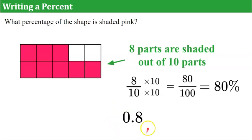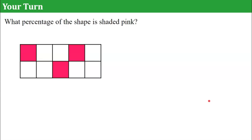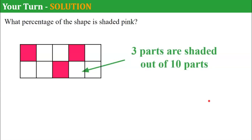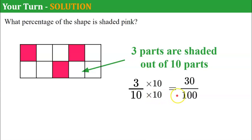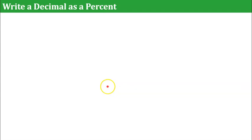8 tenths written as a decimal is 0.8, and 80 one-hundredths written as a decimal is 0.80 — these are equivalent. Your turn. Determine what percentage of the shape is shaded pink. Welcome back. Three of our ten parts are shaded. Three tenths — to write it with a denominator of 100, we multiply both numerator and denominator by 10, giving us 30 one-hundredths or 30%. So we have 0.3 (three tenths) equals 0.30 equals 30%.